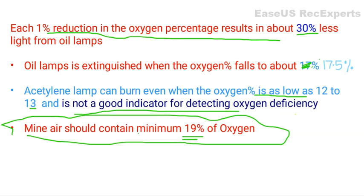Inhalation of pure oxygen under normal pressure for a limited period of up to six hours has no harmful effect. However, in deep mines of 1000 to 1500 meters depth, the air pressure is about 15% more than at the surface. But human breathing is not normally affected by this extra pressure.